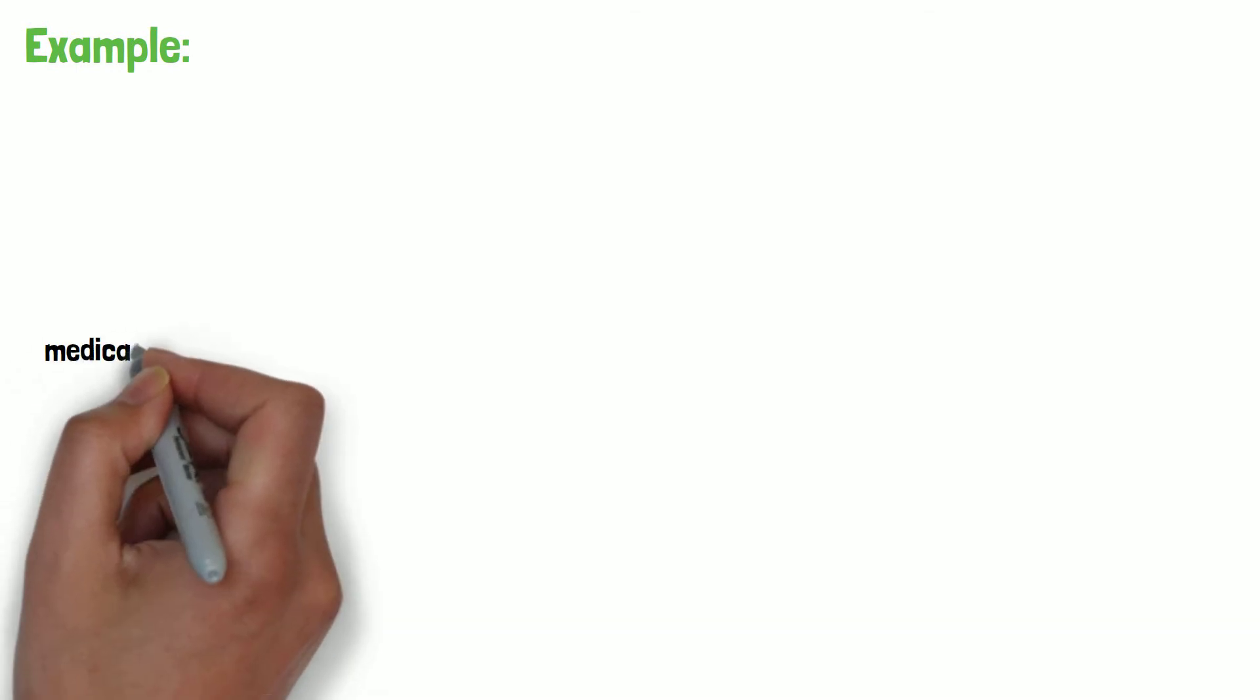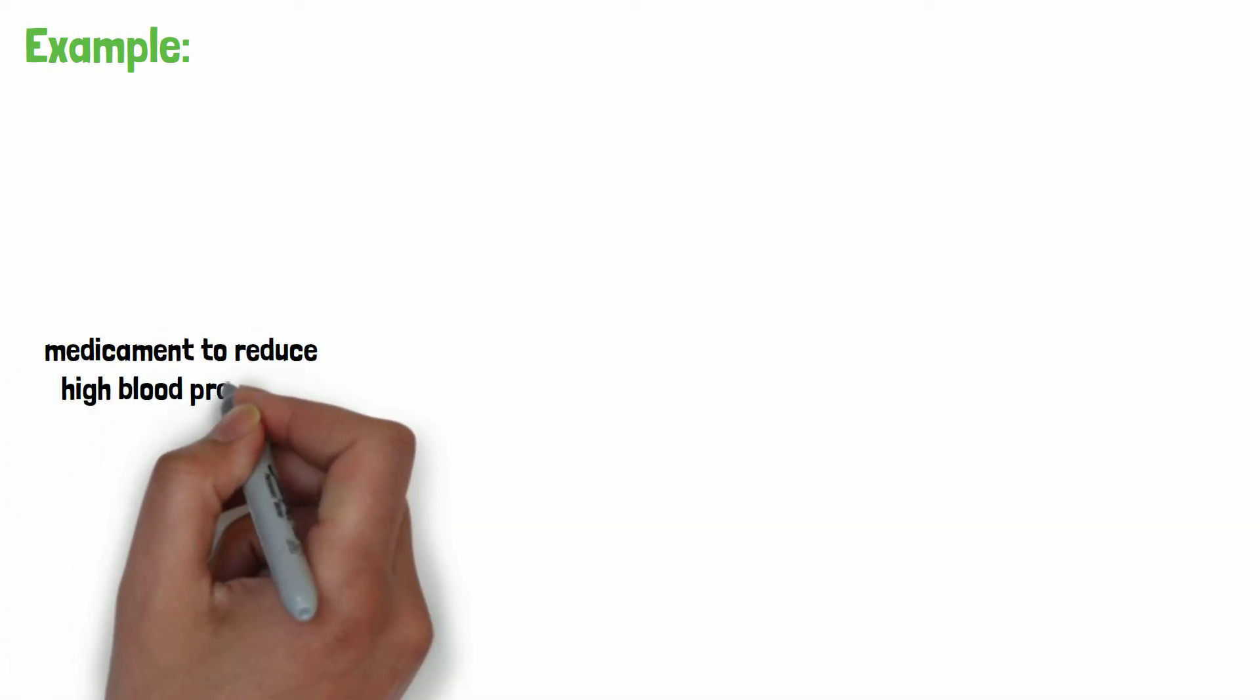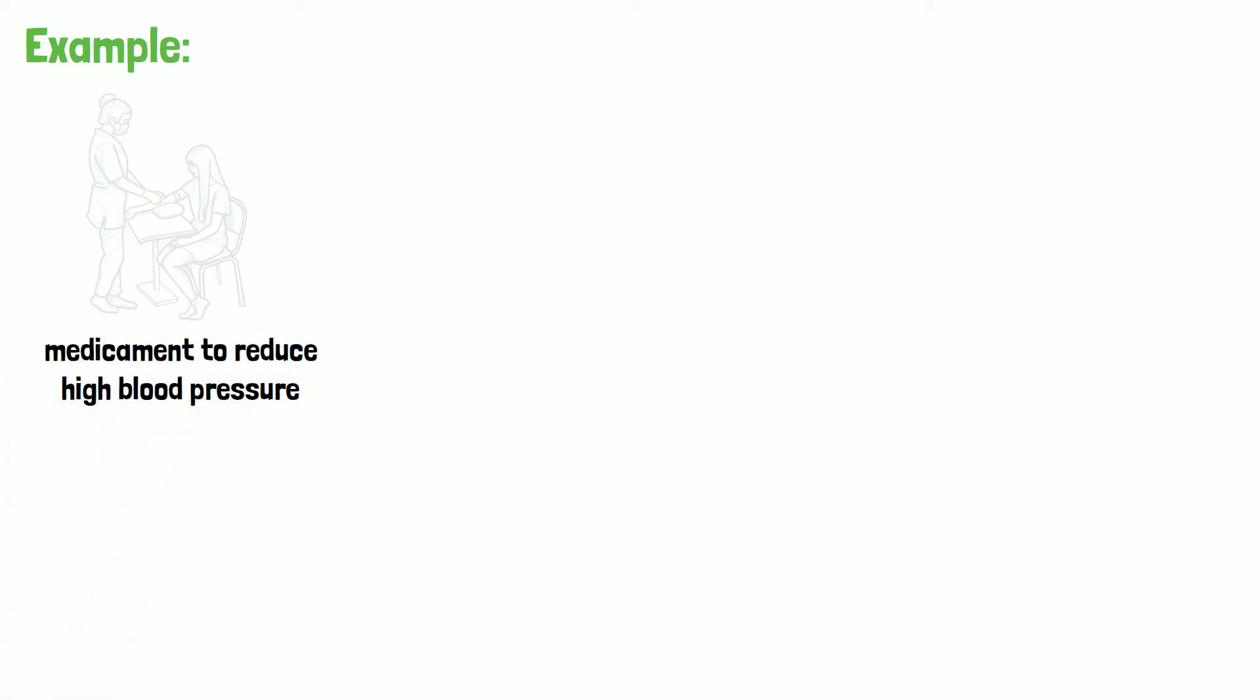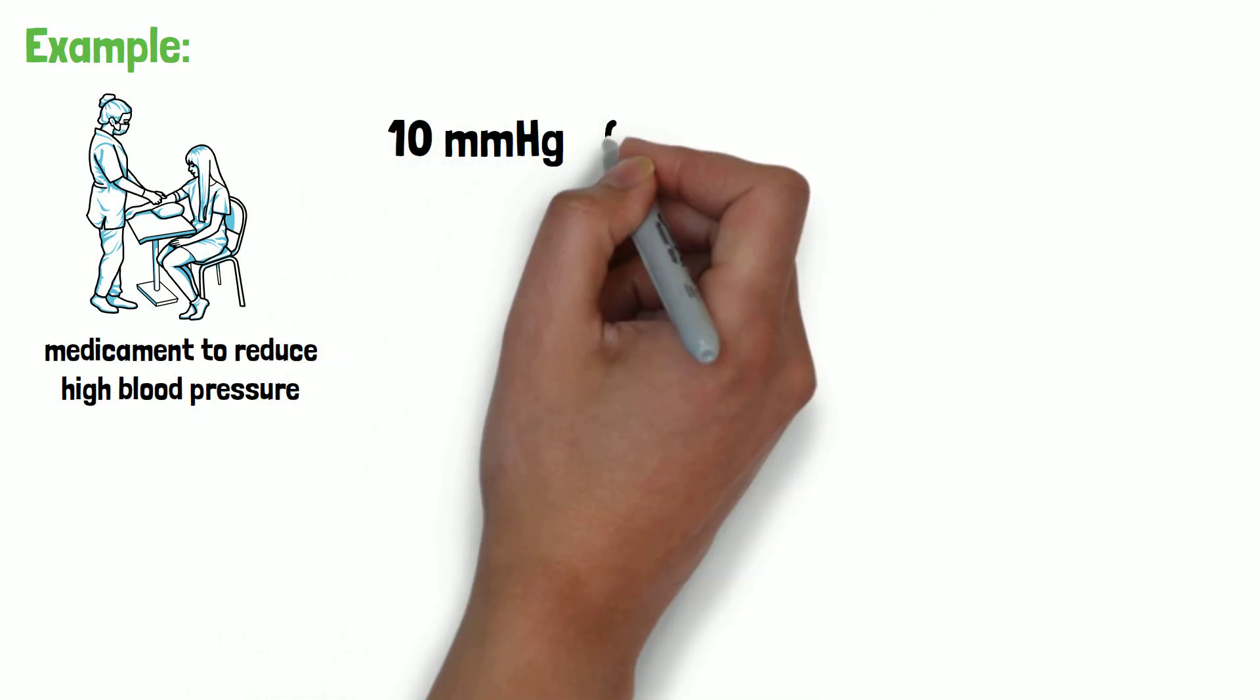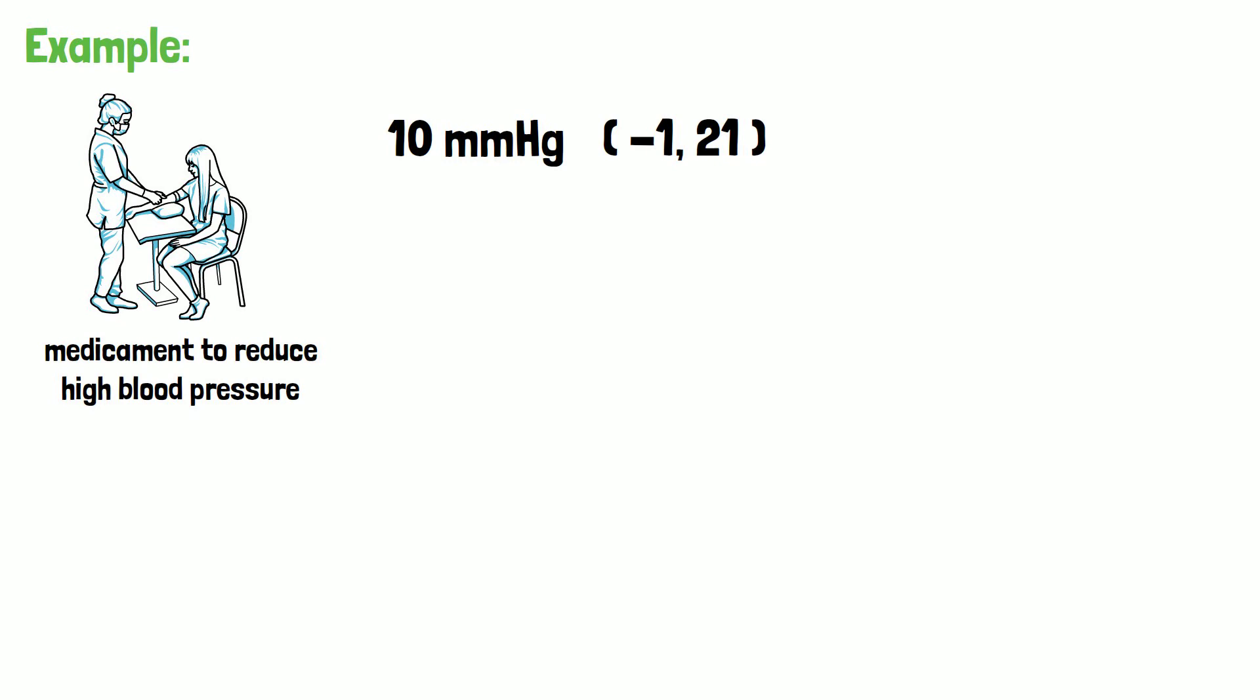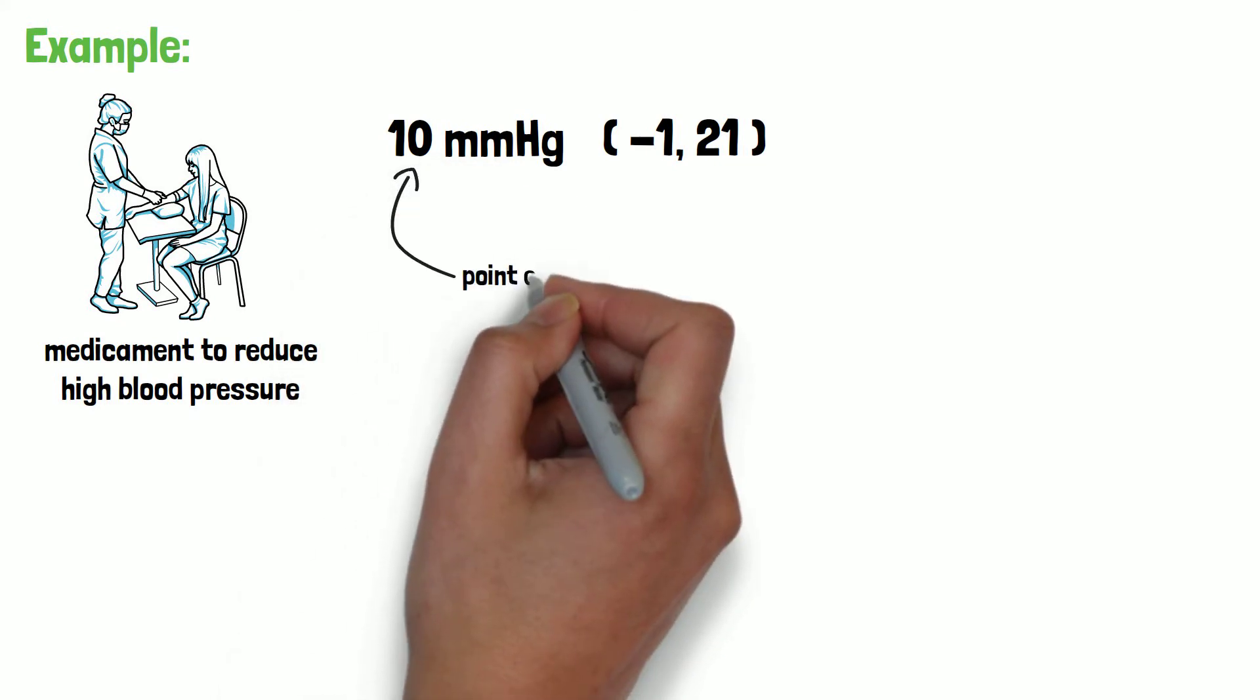Let's look at an example. In a clinical trial, a new medicament is expected to reduce high blood pressure. Two weeks after treatment start, the new medicament has led to a mean reduction of systolic blood pressure of 10 mmHg. The 95% confidence interval ranges from minus 1 to 21 mmHg.